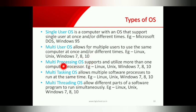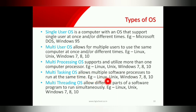Multi-processing operating system supports and utilizes more than one computer processor — examples are Linux, Unix, Windows 7, Windows 8, and Windows 10. Multi-threading operating system allows multiple software processes to run at the same time, and also allows different parts of a software program to run simultaneously — examples again include Linux, Unix, Windows 7, Windows 8, and Windows 10.